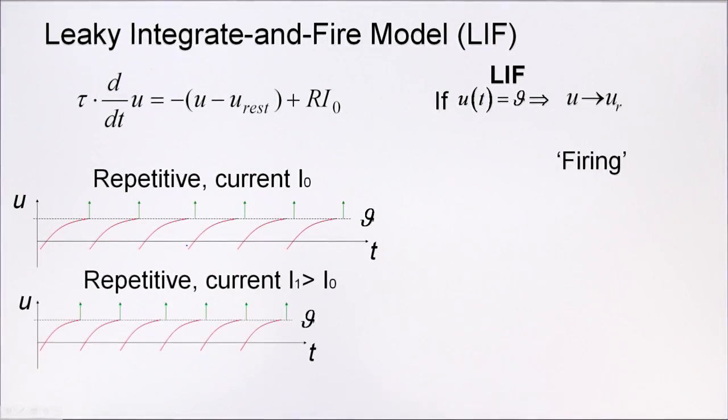If I increase the current, then the approach to the threshold is faster, the slope is higher, therefore the threshold is approached more quickly, and therefore if I look at the distance, at the interval between two spikes, here I have a large interval, for a bigger current I have a shorter interval.